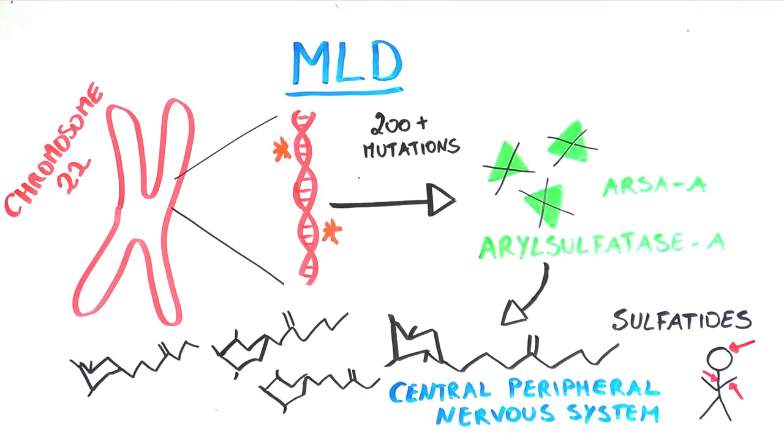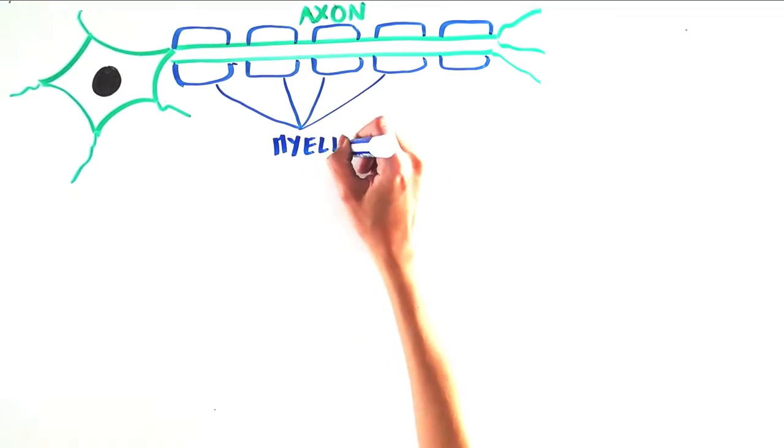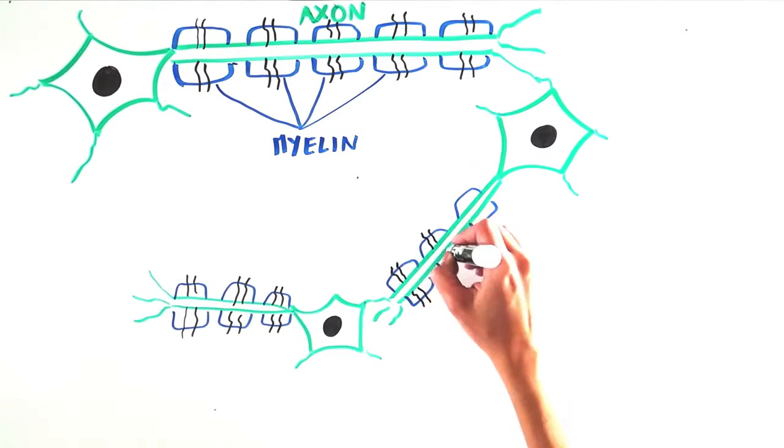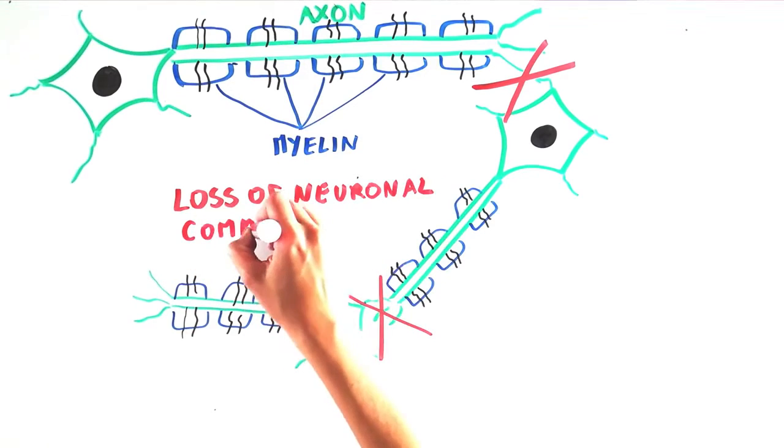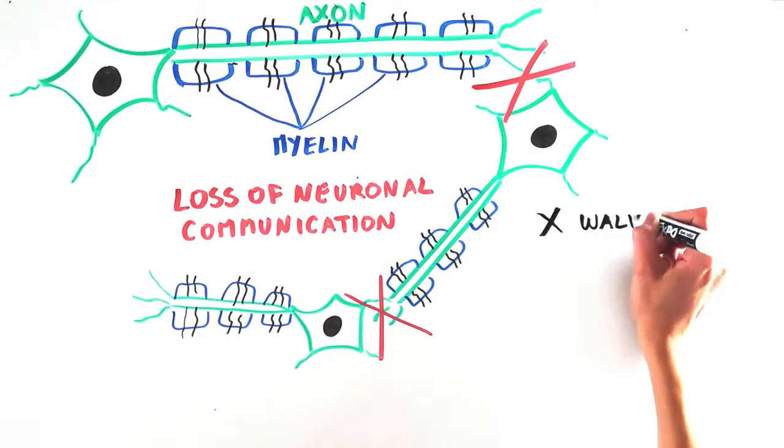The accumulation results in the protective sheath that surrounds the axons of neurons, which we call myelin, being destroyed. When neurons can no longer properly communicate with each other, there is a loss in motor and cognitive skills, resulting in a variety of symptoms that MLD patients experience.